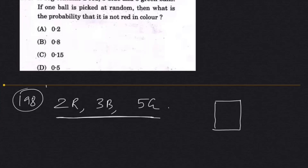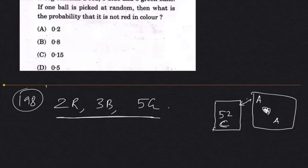A bag contains 2 red balls, 3 blue balls and 5 green balls. If one ball is picked at random, what is the probability that it is not red in color? You know that there are 52 cards in a deck of cards — what is the probability that you pick one specific card? It is 1 out of 52, because there are 52 cards inside.